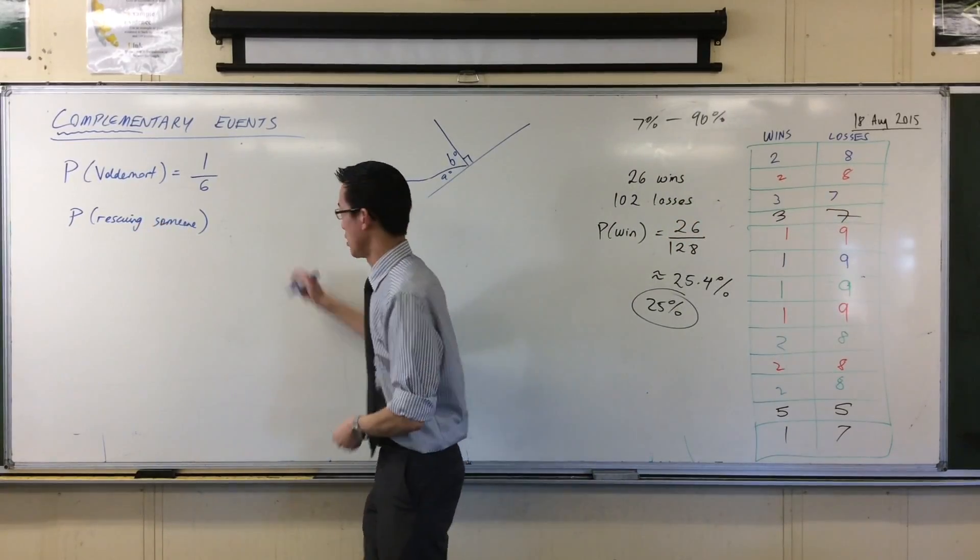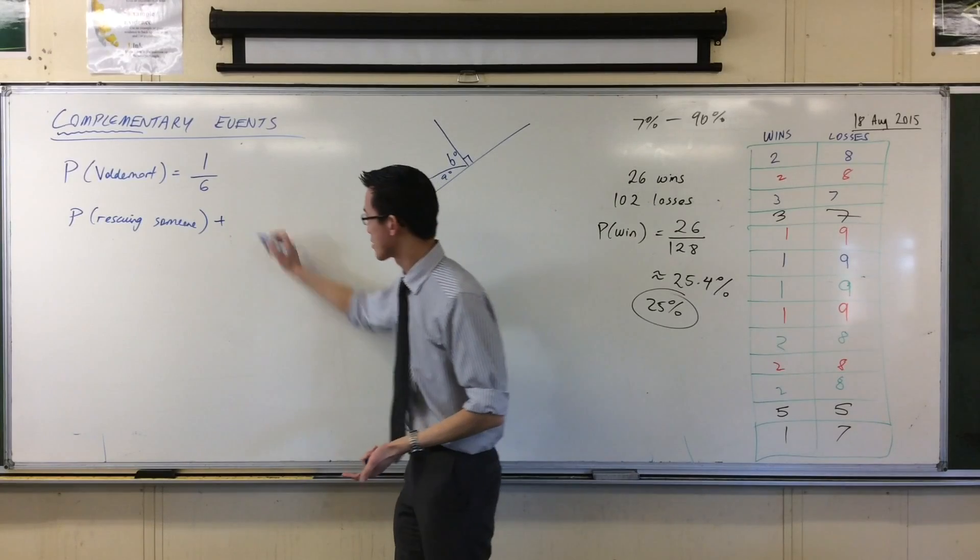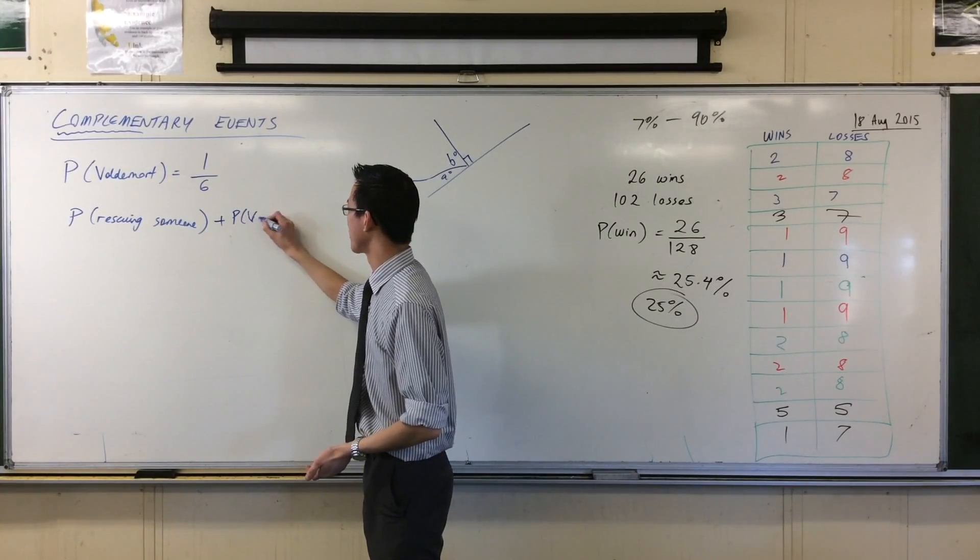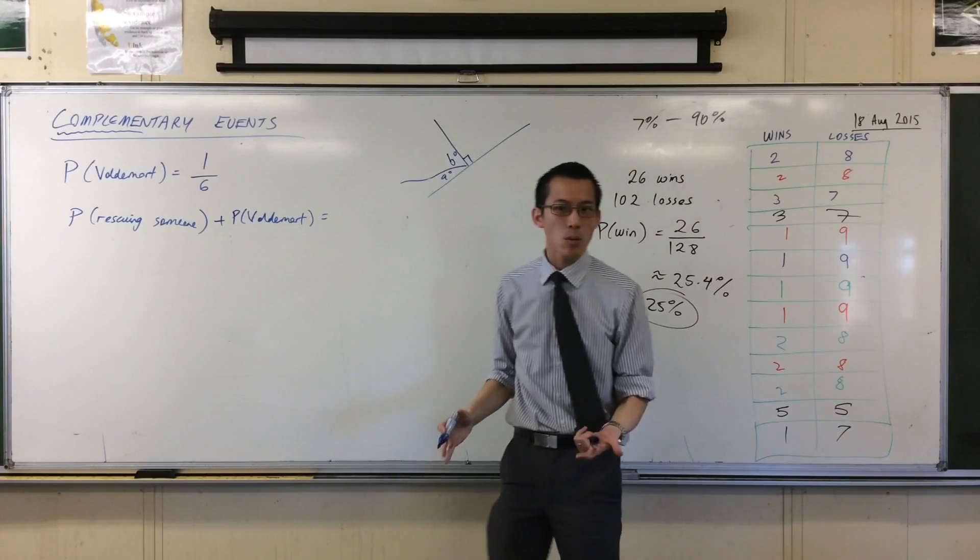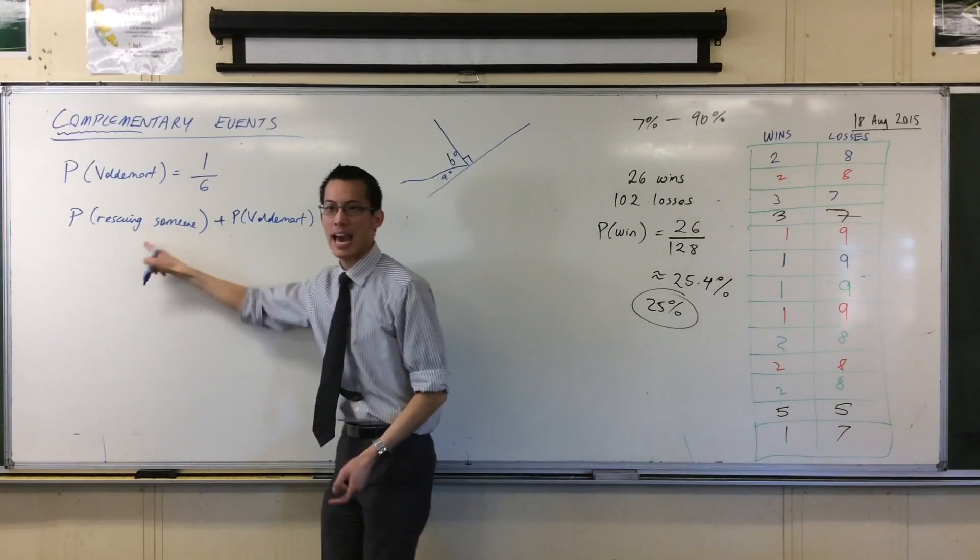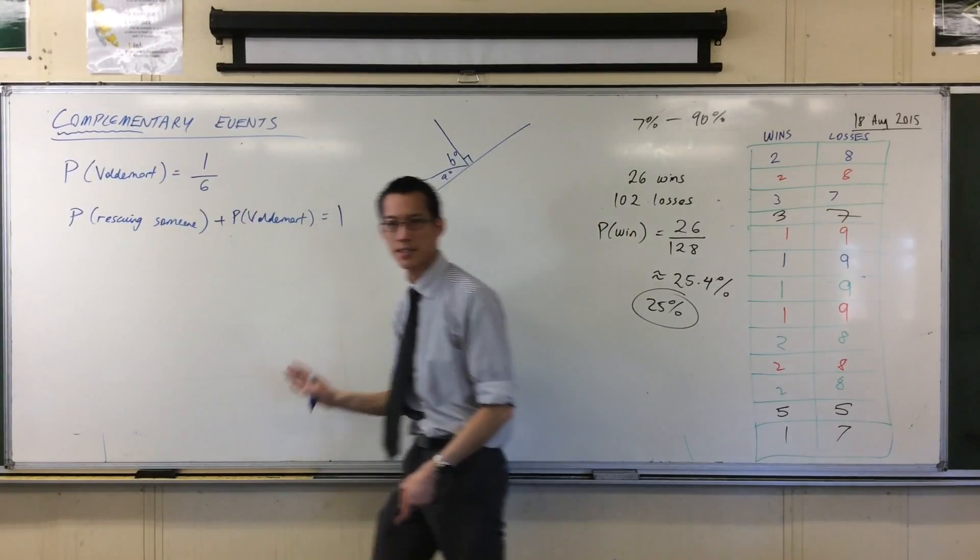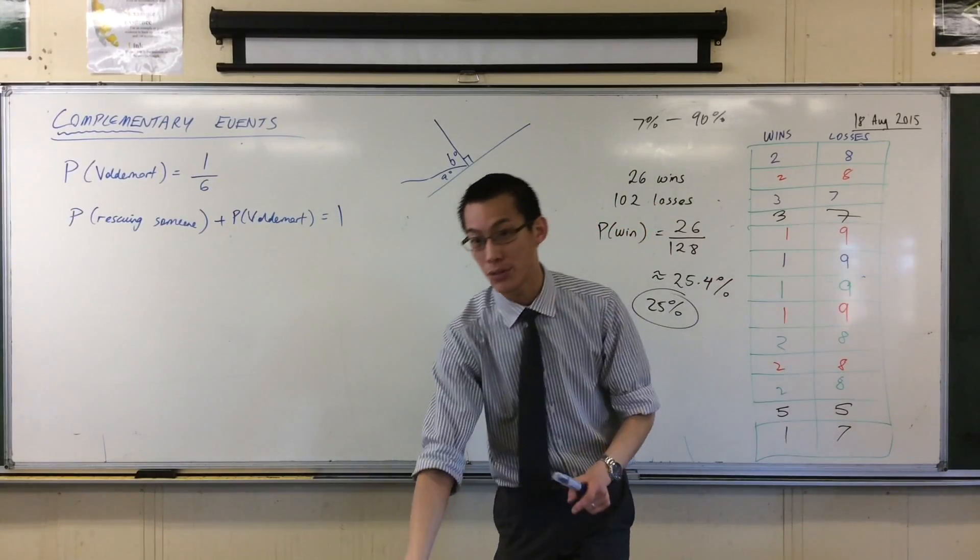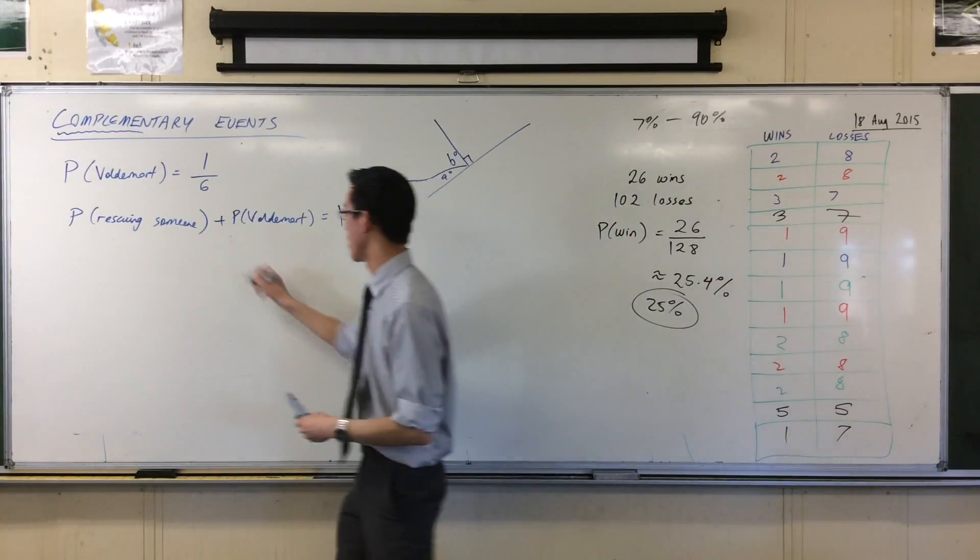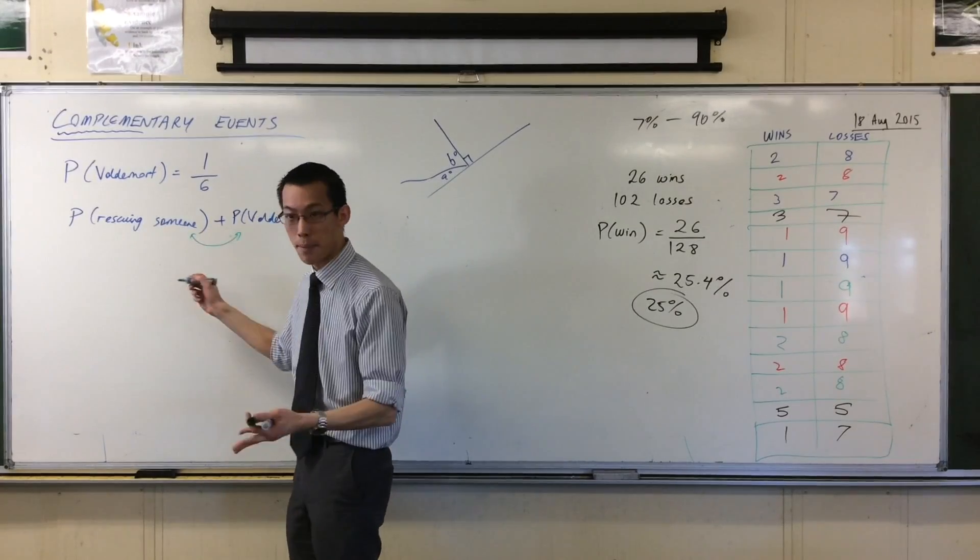Therefore it stands to reason that the probability of this plus probability of this, if it's certain, it should add up to one, because it's certain, 100% chance. So I'm going to write: the probability of rescuing someone plus the probability of getting killed by Voldemort, that's equal to one. One or the other must happen for sure. They're opposite events, they go together, and that's why we call them complementary events.